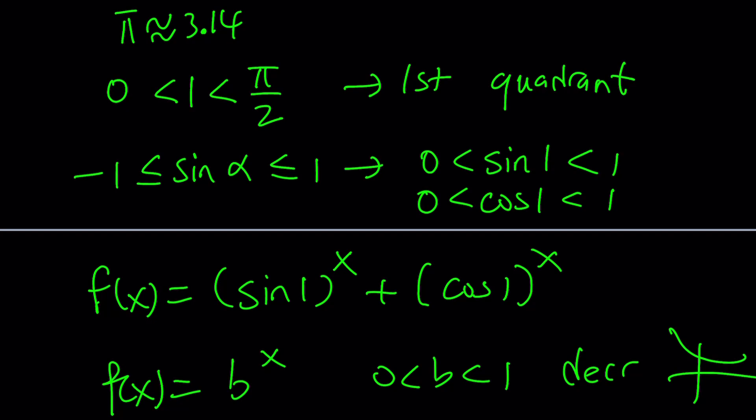Cool. And since sine 1 and cosine 1 are both less than 1, that means our function is going to be decreasing. But you're adding two decreasing functions. What does that mean? It just means that f of x is decreasing, because if you add two decreasing functions, you always get a decreasing function. Make sense?